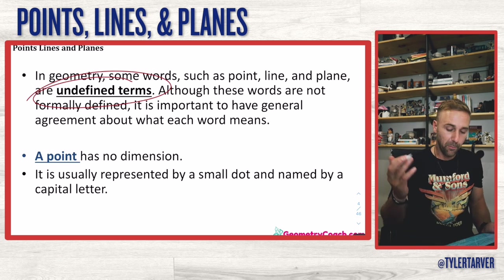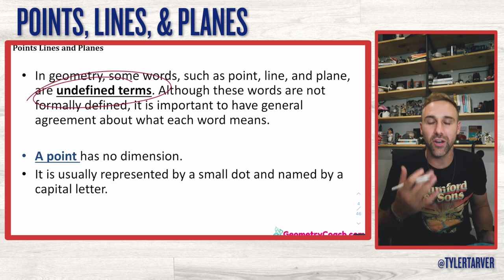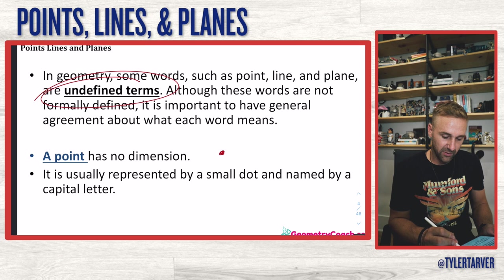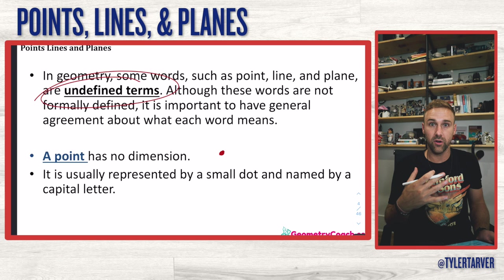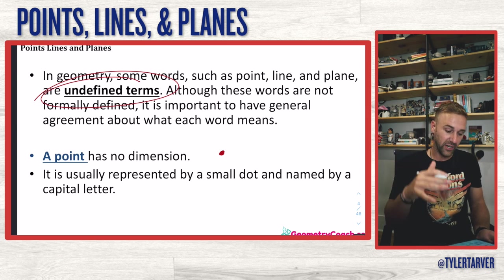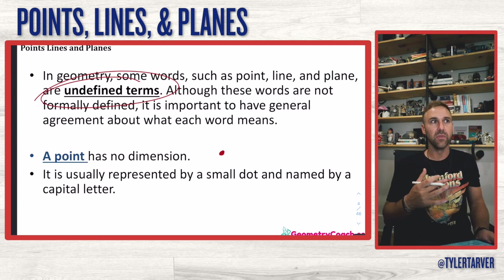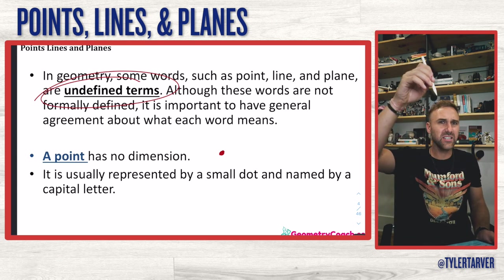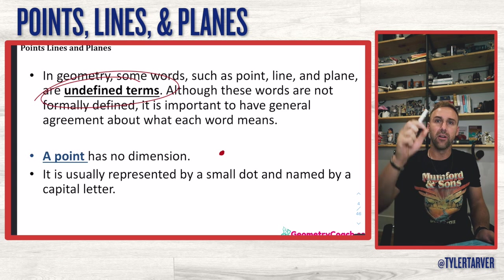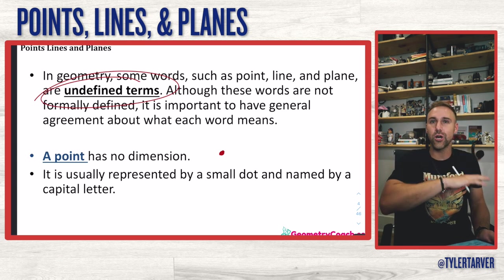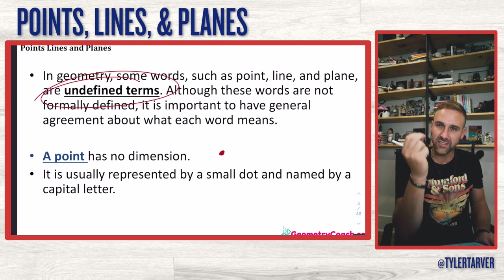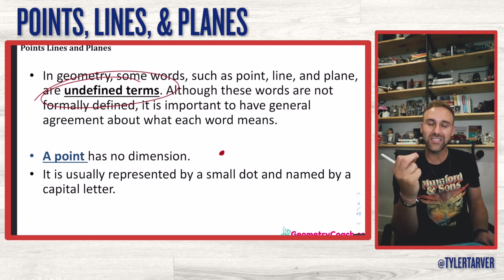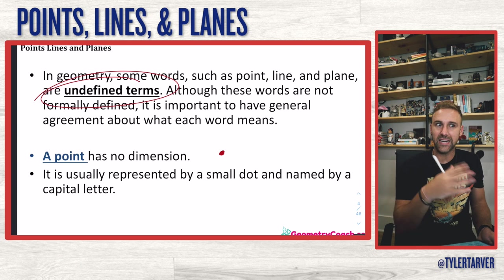The first one is a point. A point is more commonly called a dot. Whenever you start drawing them on a graph, you're going to call it a coordinate — but that's the same thing, they're a point. It has no dimension. Think of it like the very tip of a pencil hitting the paper — that is it. It has no depth, it's not moving in or out. It's just a point, the simplest part of any type of coordinate plane.